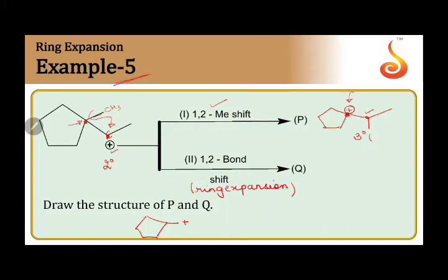In this case, we have a cyclopentyl ring system. On the adjacent carbon, we have a positive charge. In such cases, the ring can expand—a five-member ring can become a six-member ring. We should know that a six-member ring is very stable, more stable than a five-member ring. Five-member ring is more stable than four-member, four more than three. So as the ring size increases till six carbons, the stability goes on increasing.